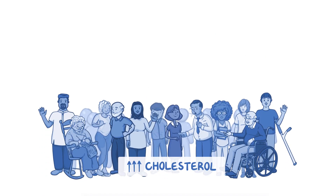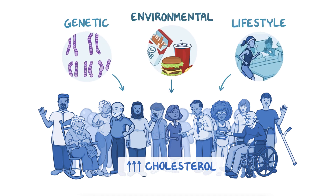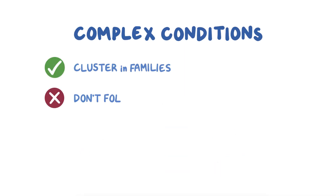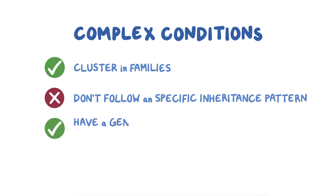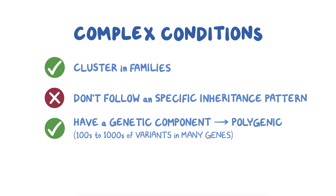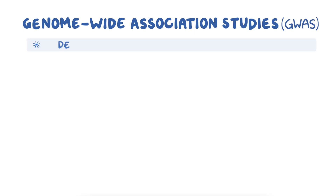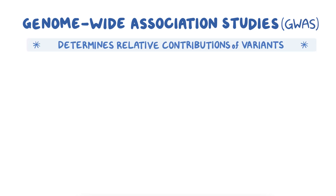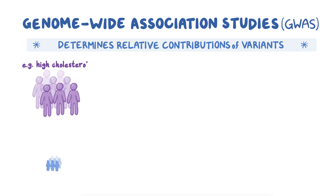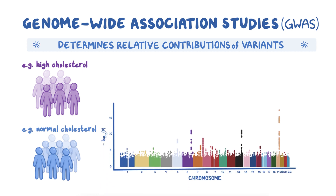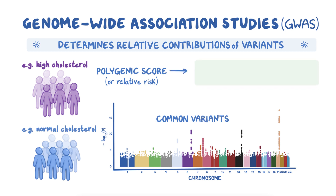For most people with high cholesterol, however, genetic, lifestyle, and environmental factors likely play an equally significant role. Complex conditions like high cholesterol cluster in families but don't follow a specific inheritance pattern. The genetic component is called polygenic, referring to the additive effect of hundreds to thousands of variants in many different genes. Population-based studies called genome-wide association studies, or GWAS, can help determine the relative contributions of variants by identifying variants that are more common in the genomes of affected individuals compared to unaffected. Genetic testing for polygenic variants provides a polygenic score or relative risk of developing the condition. This information can be used to encourage healthy lifestyle choices and in some cases earlier screening or closer monitoring.